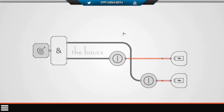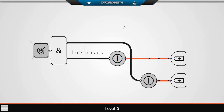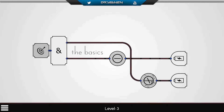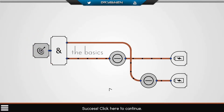Third level is called the Basics. Your target is over here. And this is an AND gate — it's active when both inputs are powered. So we basically have to turn on those two and it will be powered.